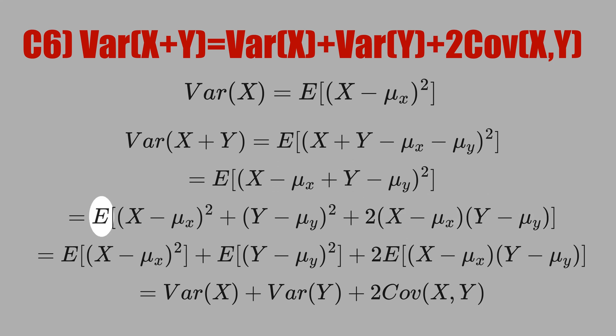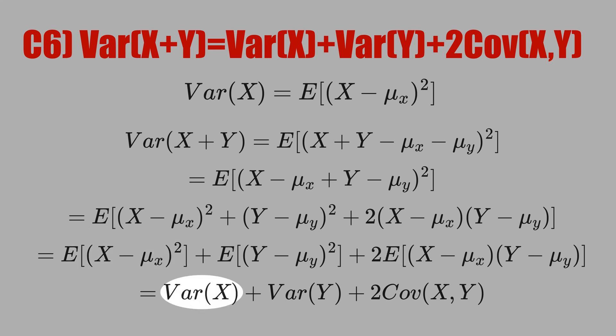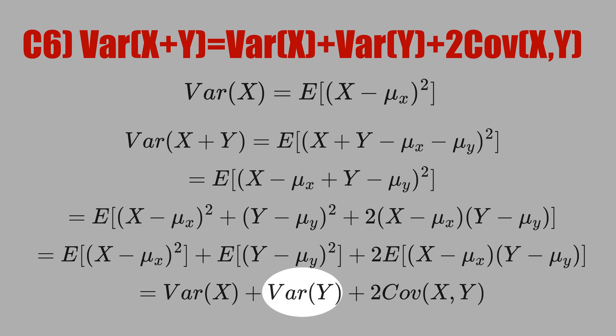Now we have to take the expectation of all terms. We apply the expectation here, here, and here, because two we treat as a constant. This first term is the variance of X, this second term is the variance of Y, and this third term is the definition of the covariance of X and Y.